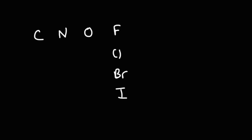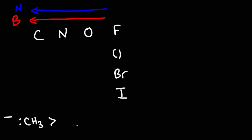Nucleophilic strength typically mirrors base strength — not always, but generally speaking. Consider the periodic table: base strength increases towards carbon. Nucleophilic strength also increases towards carbon. So what this means is that the methyl carbanion is a better nucleophile than the amide ion, and H₂⁻ is a better nucleophile than hydroxide, which is a better nucleophile than fluoride.